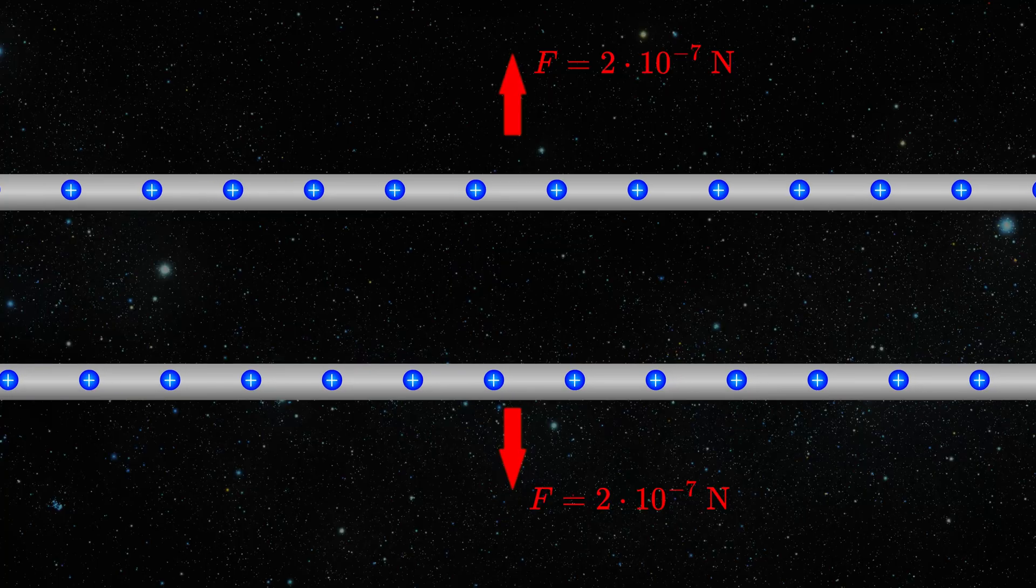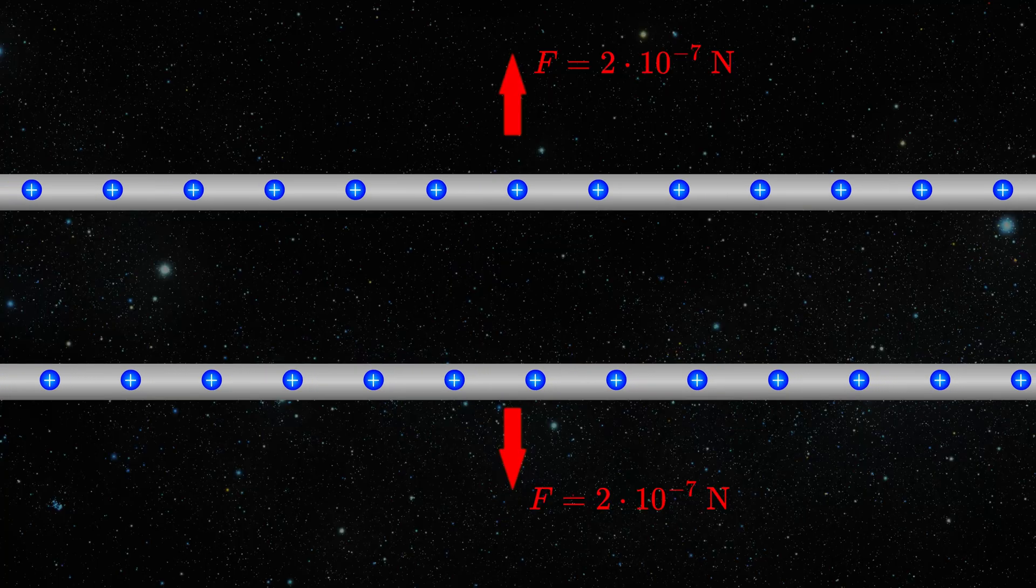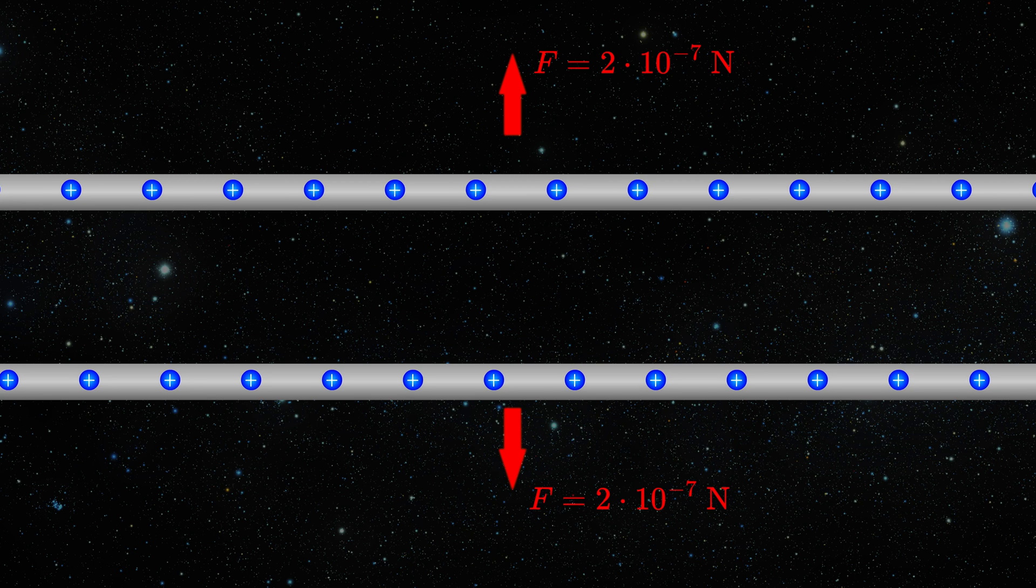But the main takeaway of this is that we choose current to be fundamental unit because it's much easier to measure. Now you can ask why we used this particular number of newtons per meter in definition of ampere, and the reason is history. Apart from the fact that you want to have the ampere to be a practically sized unit.